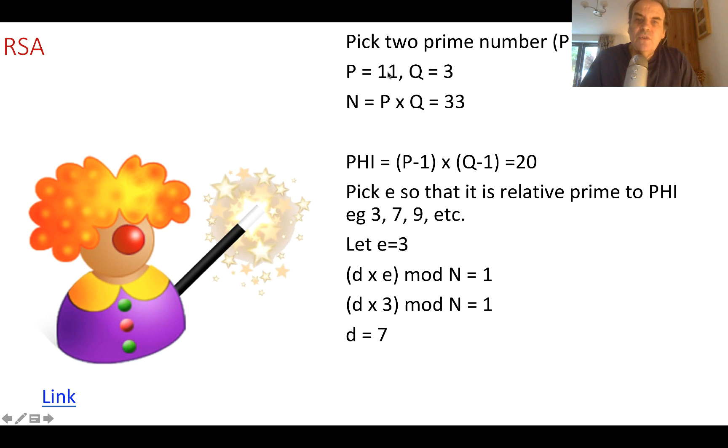So we'll take quite small values, 11 and 3. So we calculate our N, our modulus, as P times Q. In this case, it's 33. We then work out a value called phi, which is P minus 1 times Q minus 1. So in this case, it's 10 times 2, which is 20.